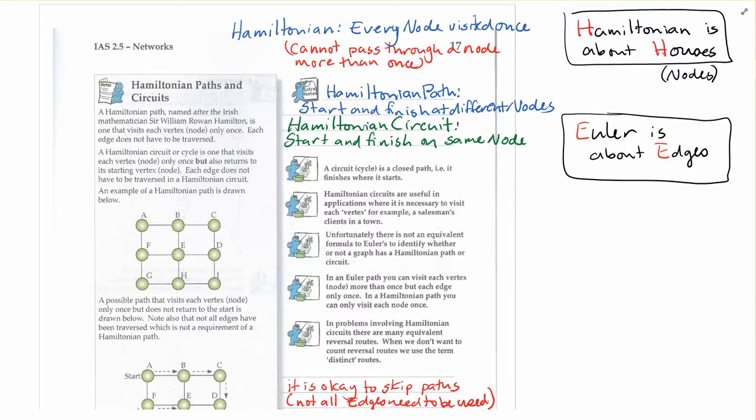Alright, so here we're going to be looking at Hamiltonian networks. We're looking for a Hamiltonian path or a Hamiltonian circuit. What a Hamiltonian is, is a situation where you can find your way through a network by visiting every single node once. You're not allowed to go through a node more than once or a vertex more than once. You can only pass through each node once, and at the end of it you've managed to visit every single node in the network.